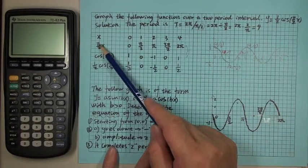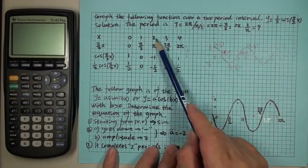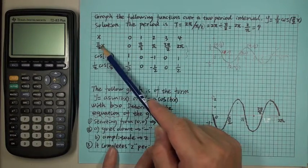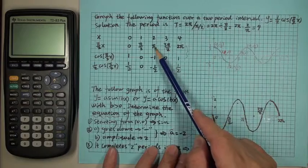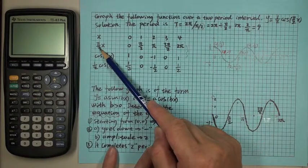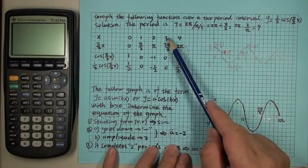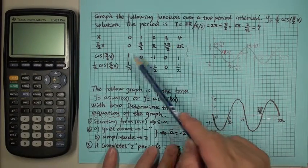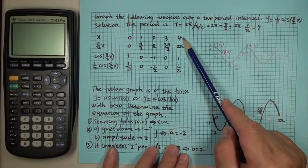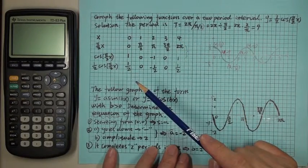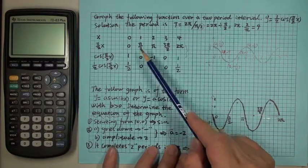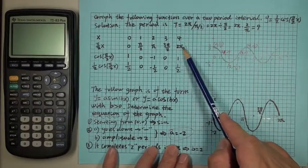Then we compute pi over two times each x value. Pi over two times zero is zero. Pi over two times one is pi over two. Pi over two times two is pi — because the twos cancel. Pi over two times three is three pi over two. And pi over two times four is two pi. So we now have zero, pi over two, pi, three pi over two, two pi.